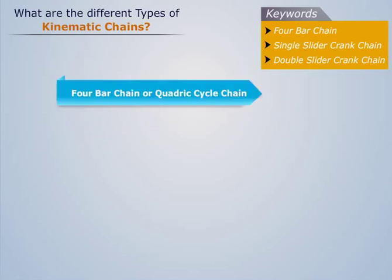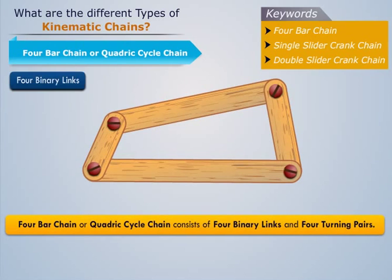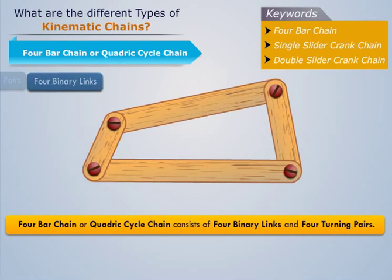A four bar chain or quadric cycle chain is the simplest kinematic chain. It consists of four binary links and four turning pairs.